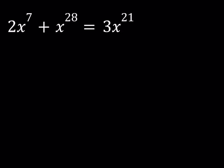Hello everyone. In this video we're going to be solving an un-Vigintic polynomial equation. I know that term is not very common, but it just means 21st power. We have this equation: 2x to the 7th power plus x to the 28th power is equal to 3 times x to the power 21.